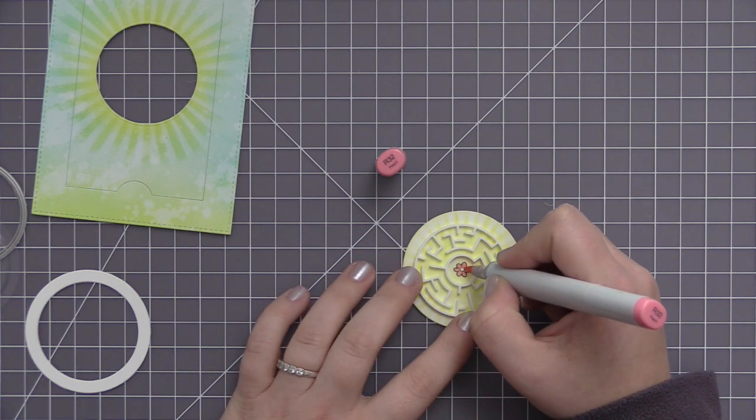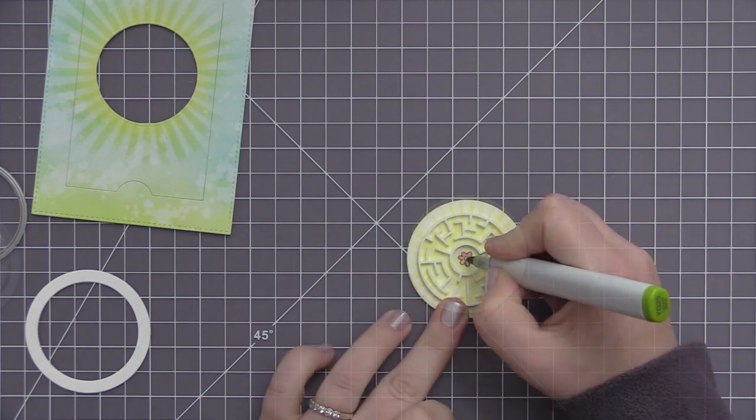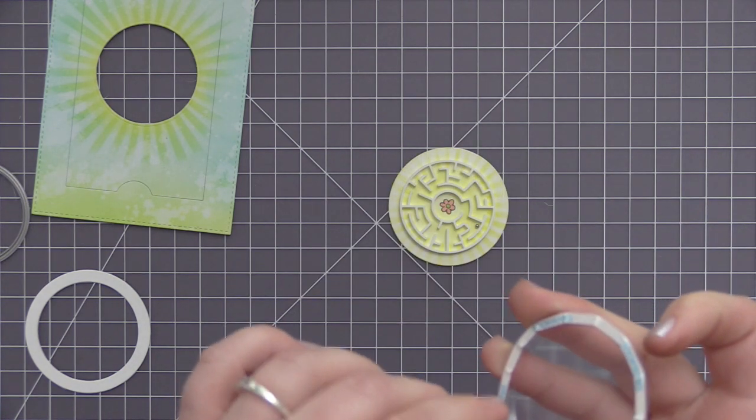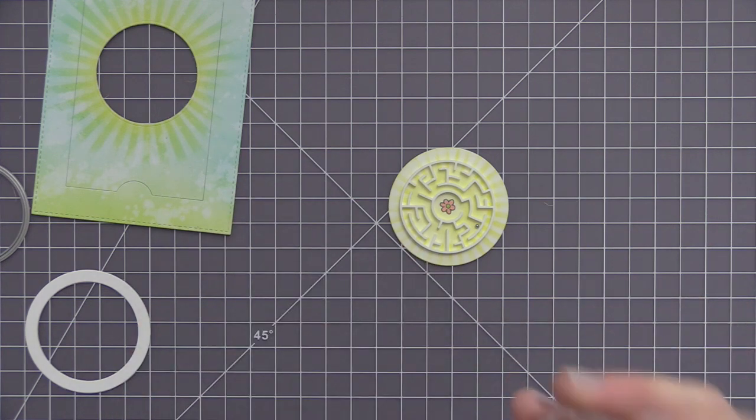Then I also added a little maze sphere, which is the little silver ball inside my maze. I added a little bit of color to the flower, which I almost forgot to do, and now I'm going to put the maze together.